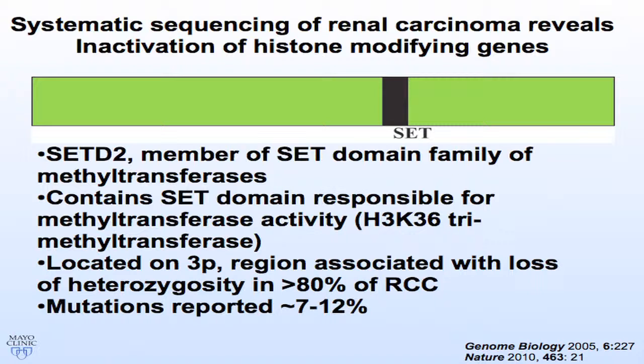In fellowship, instead of picking the first or second most frequent mutation, I thought I could slide under the radar and pick the third most mutated enzyme in renal cell carcinoma. At the time, mutations were reported in single digits, but with recent data it's more double digits.